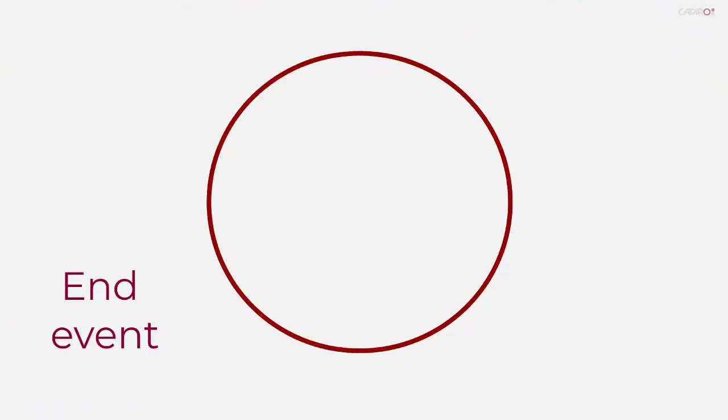The basic form of an end event is a circle drawn with a thick line. The empty form of the end event indicates that the activity simply ends without triggering any other action.